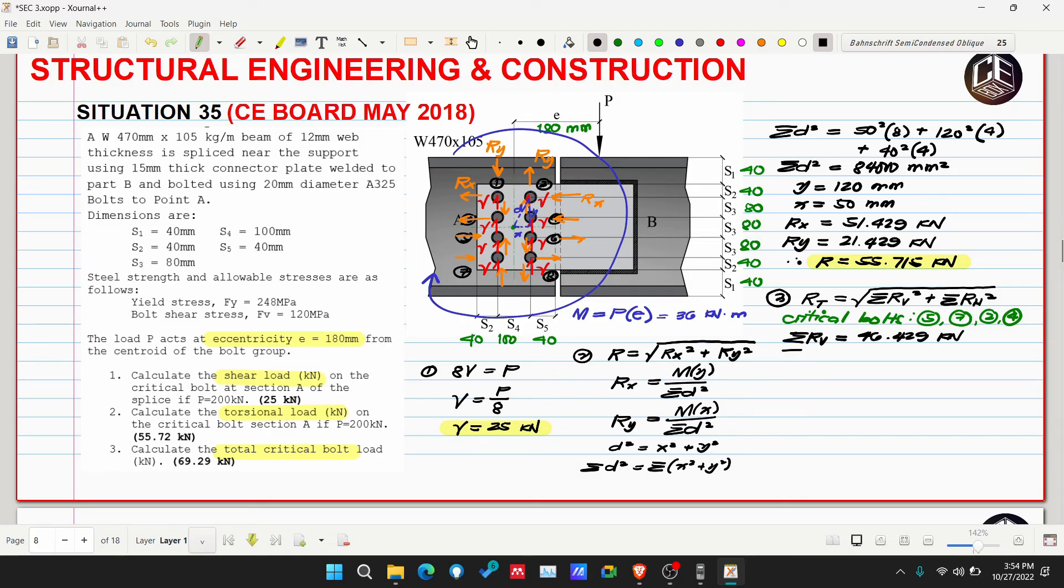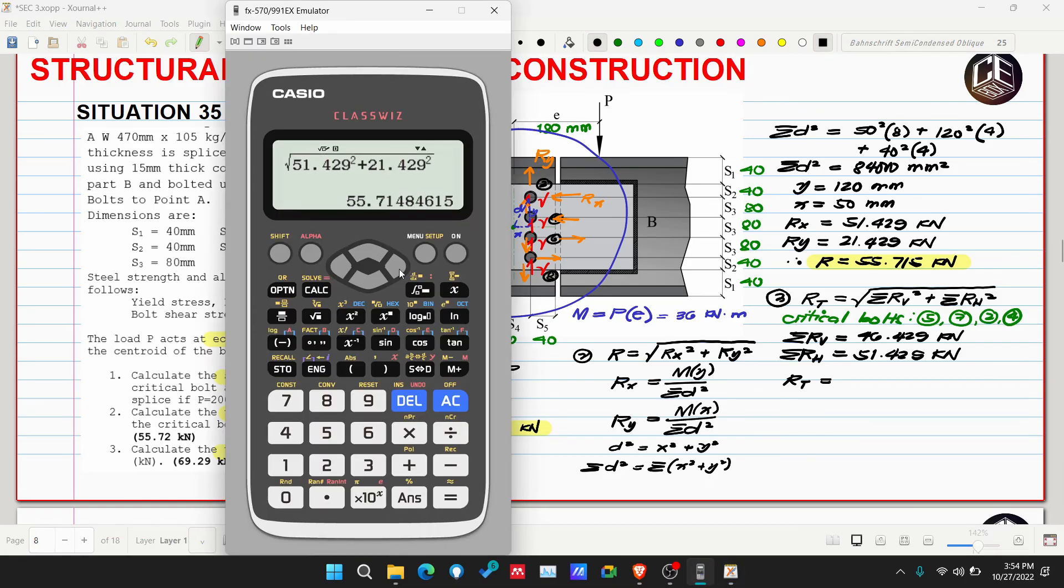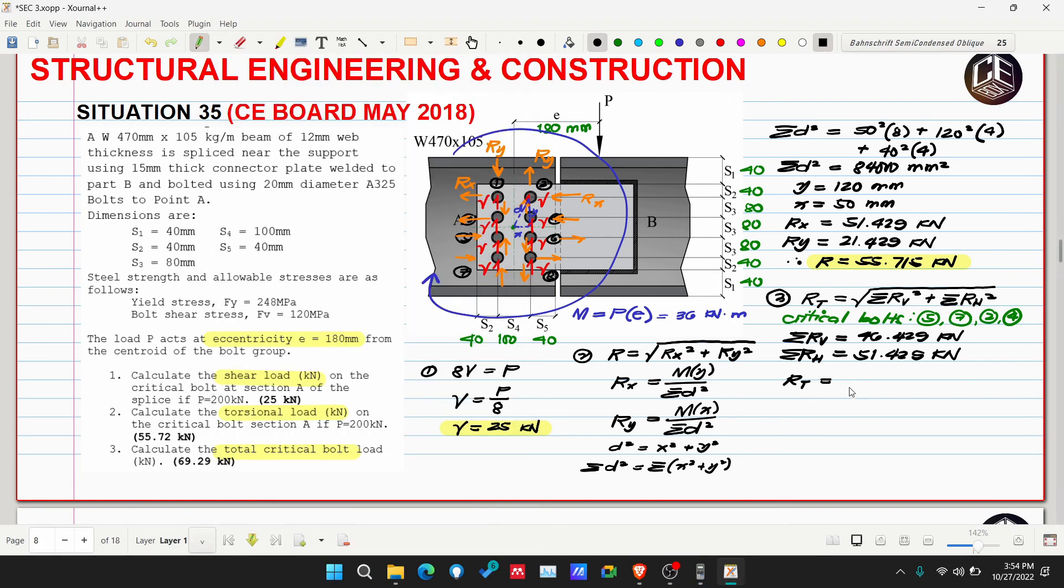Summation of RH is just equivalent to Rx because we don't have horizontal shear load or shear force. Now we can get the total critical load. This is equivalent to square root of 46.429 squared plus 51.429 squared, so 69.286 kilonewtons.